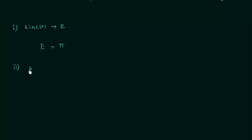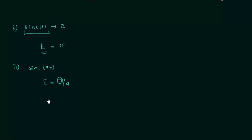If you have a normalized sinc function sinc(At), the total energy E equals π/A, where π is the total energy of the standard sinc function. For example, if A = π, then sinc(πt) has total energy π/π = 1. You can calculate the total energy of the sinc function yourself — this is homework for you.